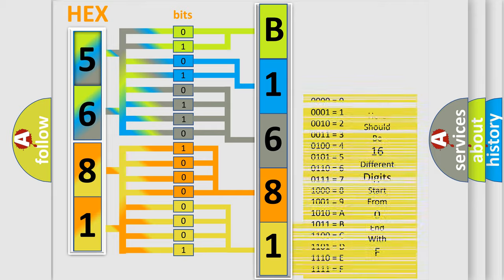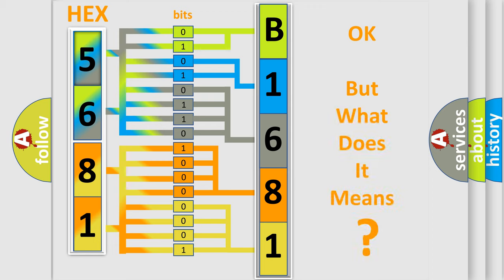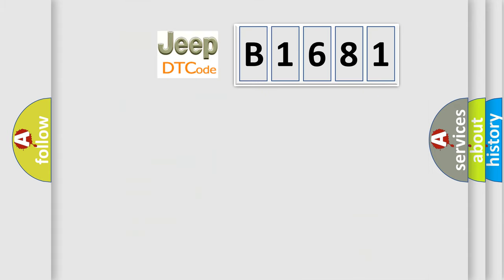We now know in what way the diagnostic tool translates the received information into a more comprehensible format. The number itself does not make sense to us if we cannot assign information about what it actually expresses. So, what does the diagnostic trouble code B1681 interpret specifically for Jeep car manufacturers?